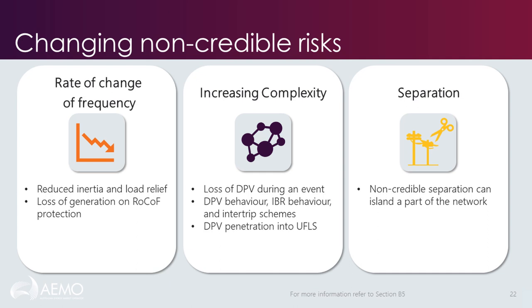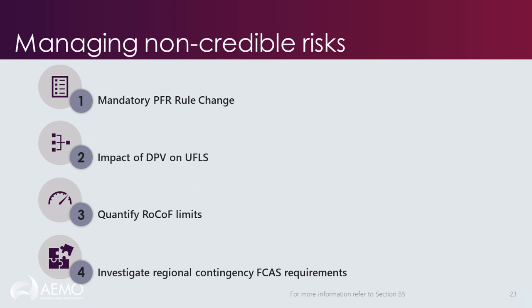Non-credible separations or islanding of a part of the system are a specific kind of non-credible event deserving attention. Historically, there have been instances of islanding South Australia or Queensland through the trip of double circuit transmission lines. South Australia has separated from the NEM nine times in the past 10 years, including non-credible separations in 2018, 2019 and 2020. As another example, New South Wales and Victoria recently separated due to bushfires. AEMO is taking action along with industry to improve frequency control, including actions to improve the outcomes of non-credible events. The mandatory primary frequency control rule change will assist in shoring up broad-based primary frequency response and improve the system's resilience to non-credible events, which will be increasingly important under low-inertia conditions.